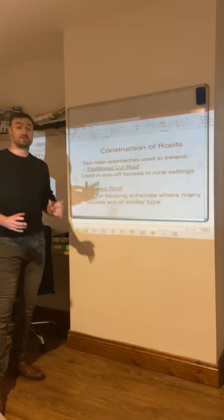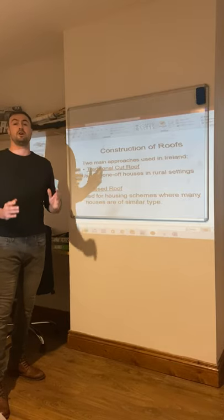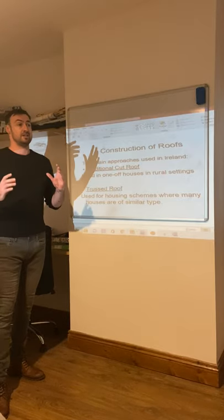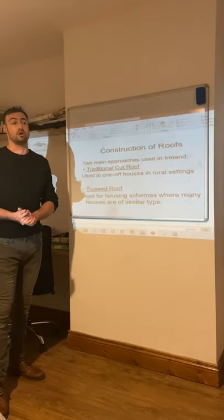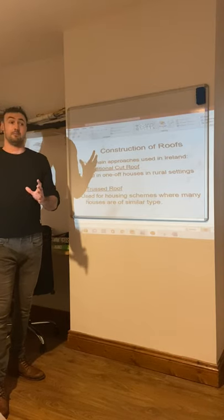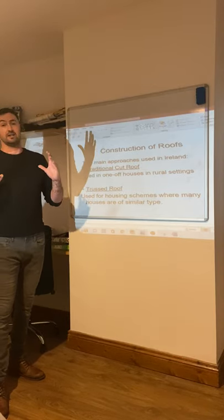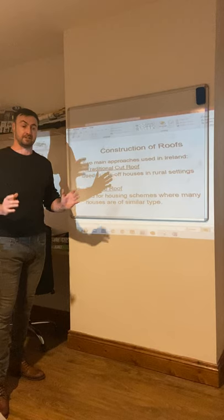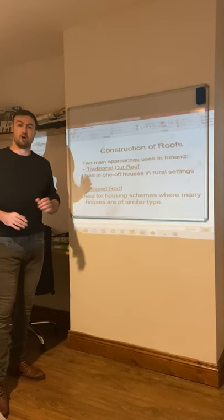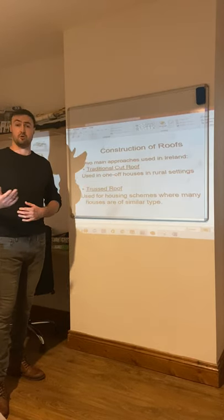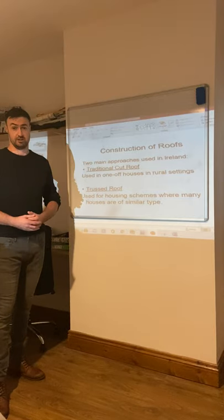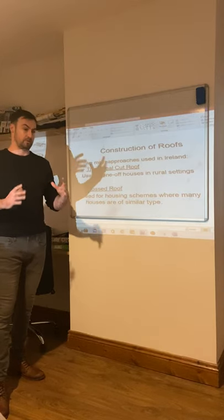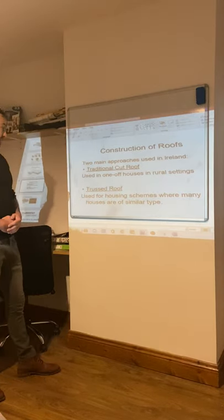Roofs come in two main types: prefabricated trusses or cut roofs. Prefabricated trusses are made off-site in a workshop using gang plates and nail plates, then craned into the building on site. They're normally used in housing estates because it's easier, more economical and more sustainable. Cut roofs are more suited to a countryside setting, a one-off housing situation, where pitched roofs come into effect.